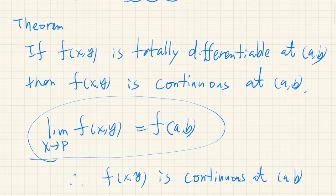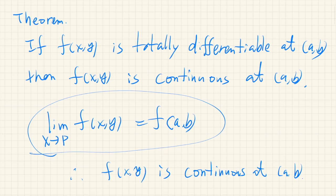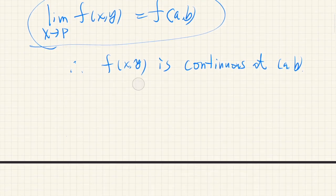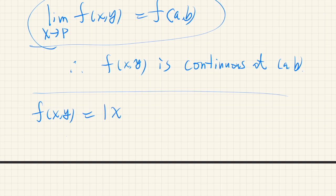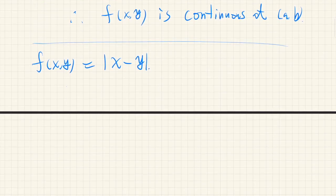One thing to be careful about is that the converse of this theorem is not always true. For example, consider the function f(x, y) equal to the absolute value of (x minus y). This function is continuous everywhere, but it is not totally differentiable.